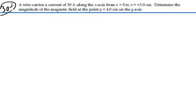Let's see if we can plot what's going on here. So we have the x and y-axis, and we have a wire carrying a current along the x-axis in the direction of positive x, and the value of that current is 30 amps.